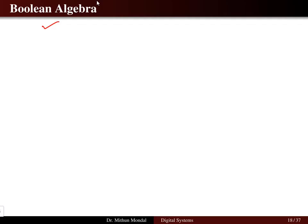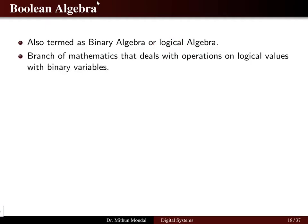The topic for today's discussion is Boolean algebra. Boolean algebra is also termed as binary algebra or logical algebra. It is used in different mathematics and computer science fields where different names are used — binary algebra, logical algebra, or Boolean algebra. It is the branch of mathematics that deals with operations on logical values with binary variables. Binary means two possibilities: either one or zero.